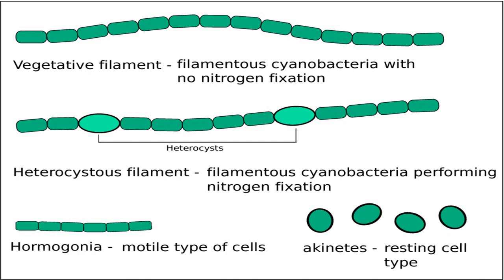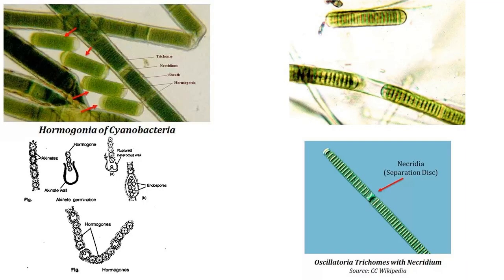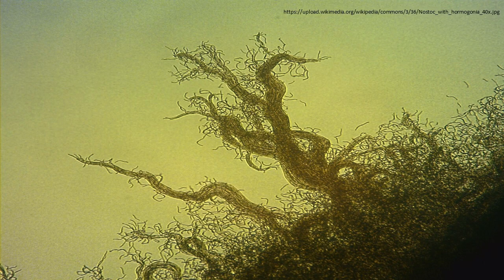Many cyanobacteria form motile filaments of cells called hormogonia. These travel away from the main biomass to bud and form new colonies elsewhere. The cells in a hormogonium are often thinner than in a vegetative cell, and the cells on either end of the motile chain may be tapered. To break away from the parent colony, a hormogonium must often tear apart a weaker cell in a filament called a necridium.